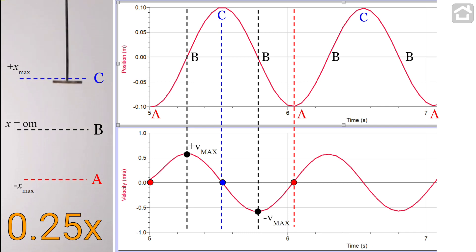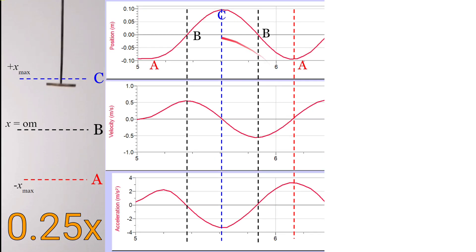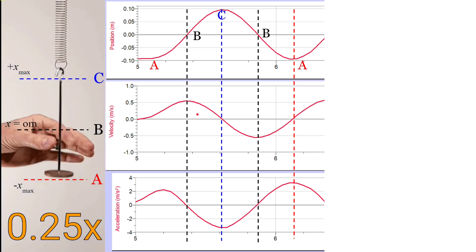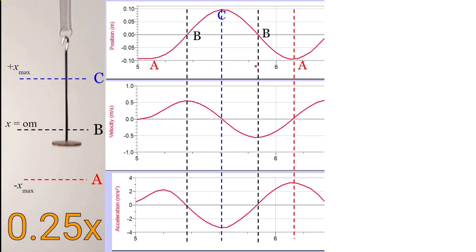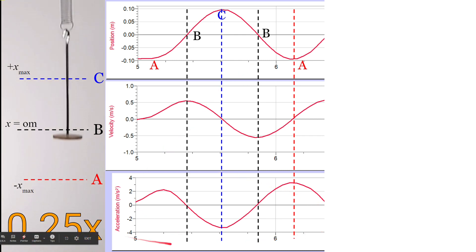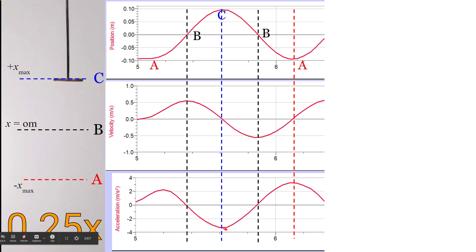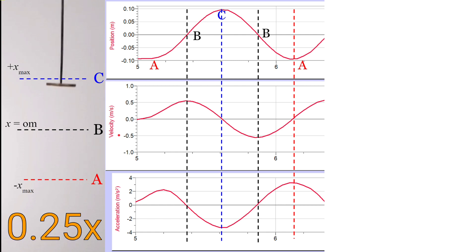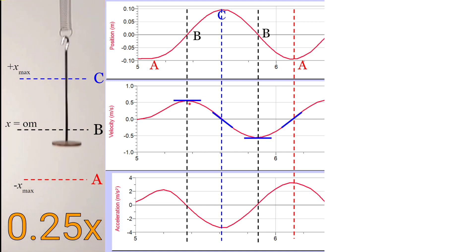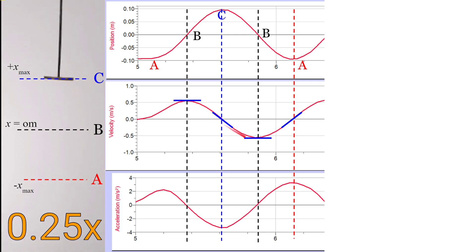What about how the acceleration changes over time? I have our position versus time graph, our velocity versus time graph, and a few times marked when it's going through the different positions. On the bottom, you can see what the data looks like for our acceleration versus time graph — it kind of looks like a sine or a cosine curve. The slope of a velocity versus time graph gives us the value of the acceleration. When it goes through position B, the velocity graph has a zero slope; a negative slope when it's at position C; a zero slope at position B; and a positive slope at position A.